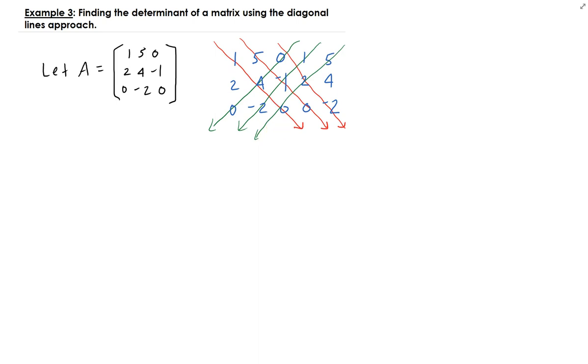Along those diagonal lines I'm going to multiply those numbers. So we have 1 times 4 times 0, that's going to give you 0. This is going to be 5 times negative 1 times 0, just 0, and then you have 0 times 2 times negative 2 which is 0.